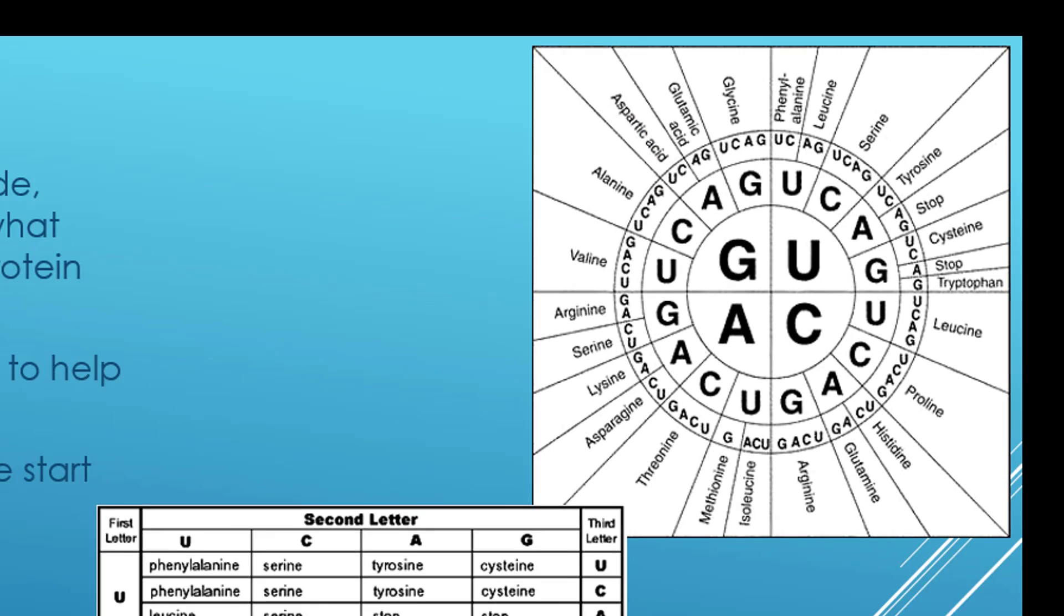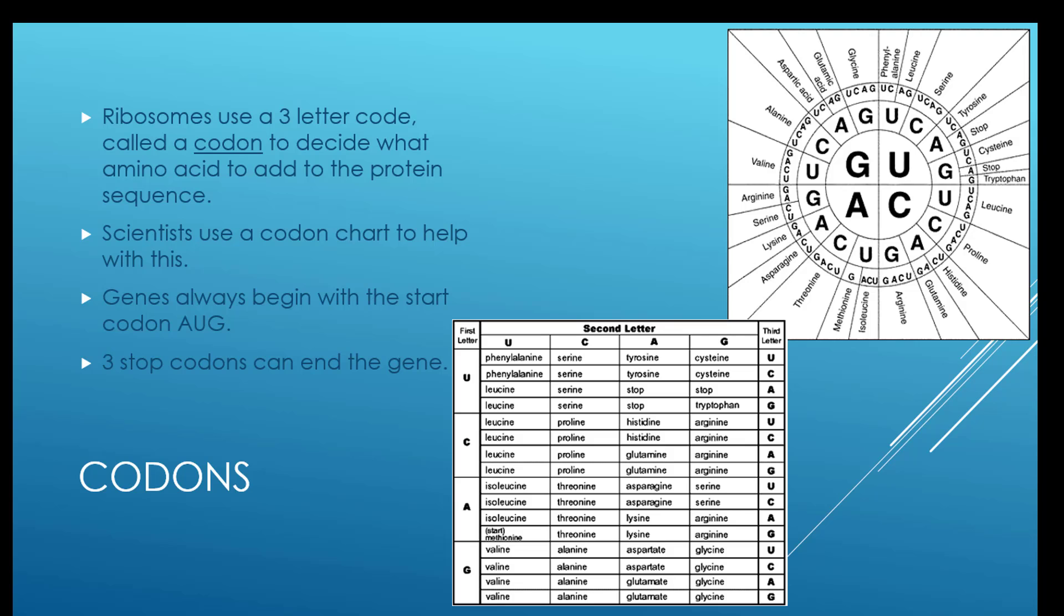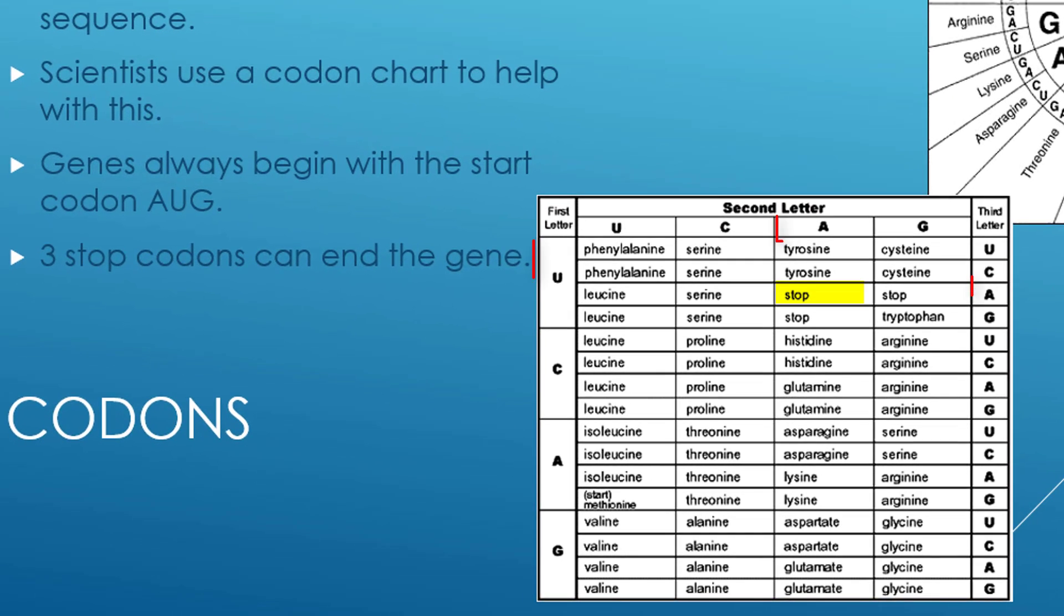Now, there are some codons that have no function other than to stop your body from producing proteins. Those are called stop codons. One example of a stop codon would be UAA. If you line up the letters U, A, and A, you get the word stop, and that works on both the square and on the circle. Whenever you get a stop codon, that's where your DNA processing is going to end. No matter how many amino acids you've added, when you get to the stop codon, you're done.